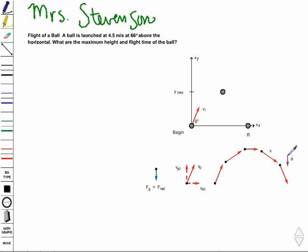We said that the acceleration of the ball was in the downward direction. It speeds up on the way down, slows down on the way up, and that is because the force of gravity is our net force, and gravity is always in the downward direction. In order to start this problem, like always, we want to write down our known values.